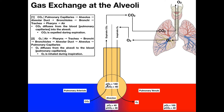Let's first look at oxygen. The PO2, or partial pressure of oxygen, in the alveolus is around 140. On the arterial side of the capillaries, the PO2 is about 40. So it's 140 in the alveolus and 40 in the capillaries. That clearly tells us that oxygen is going to move from the alveolus into the capillaries — into the blood — because the pressure of oxygen is higher in the alveolus and lower in the blood. Gas always diffuses from high pressure to low pressure, from 140 to 40. So oxygen moves from the alveolus into the blood.